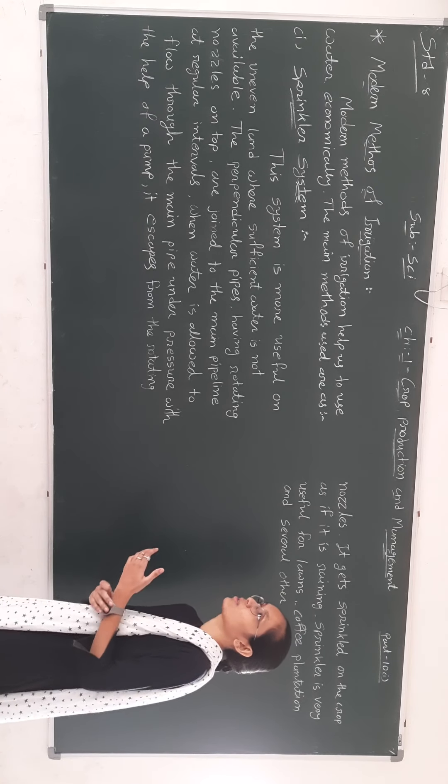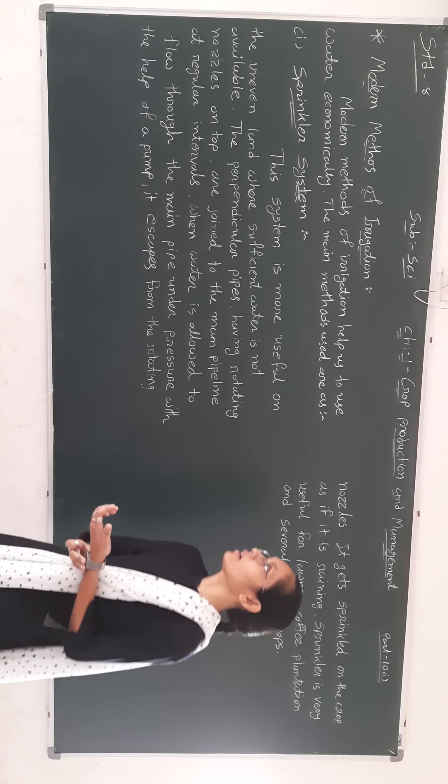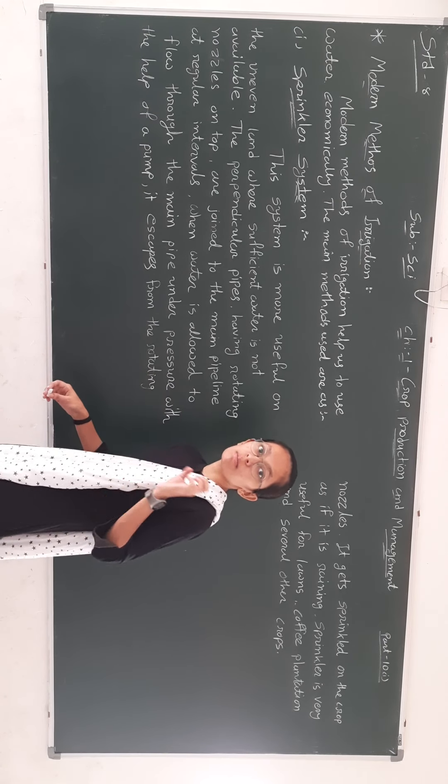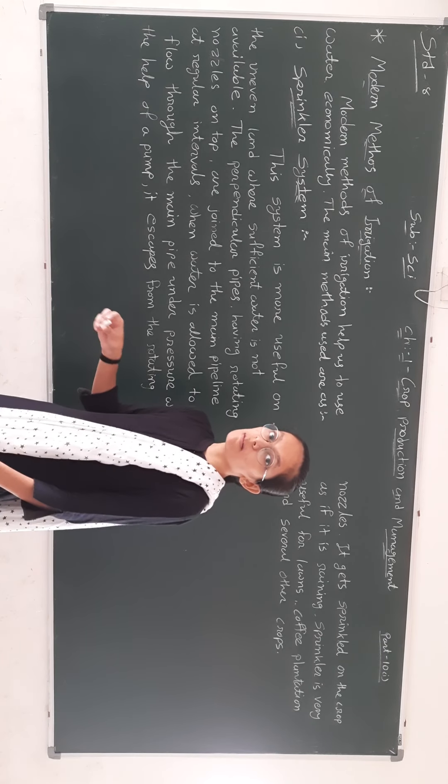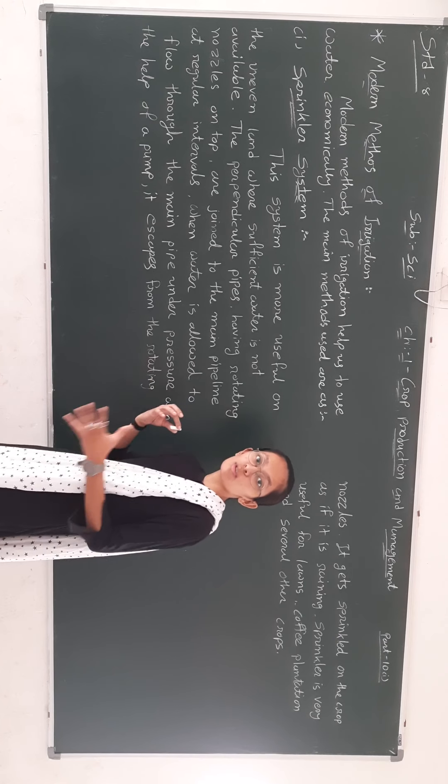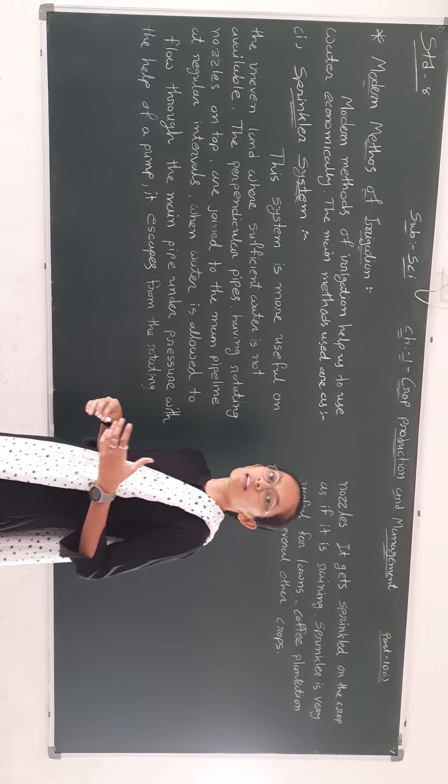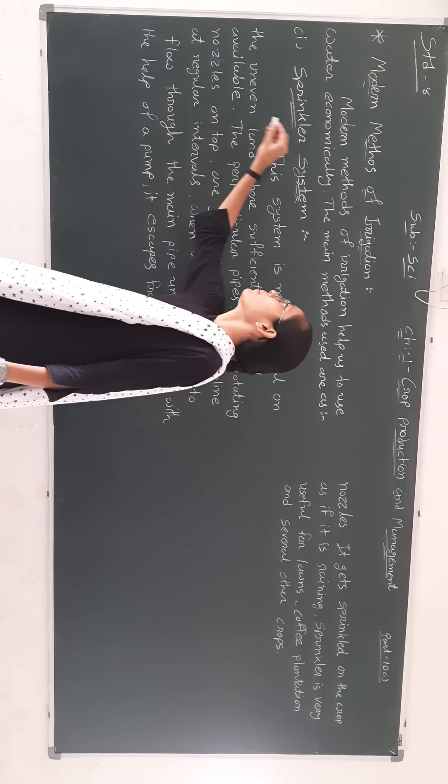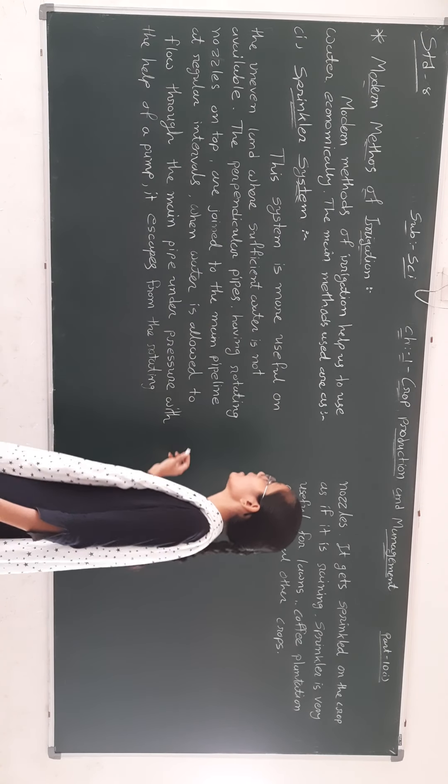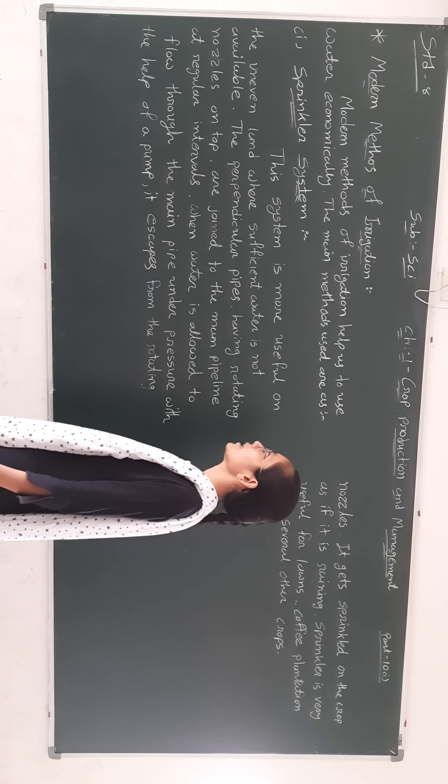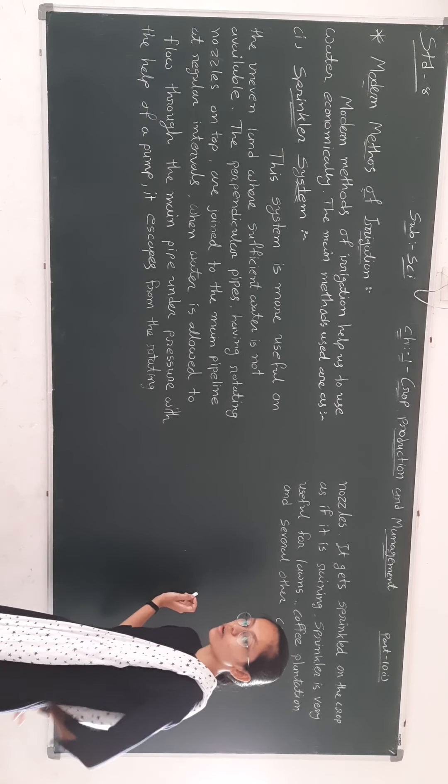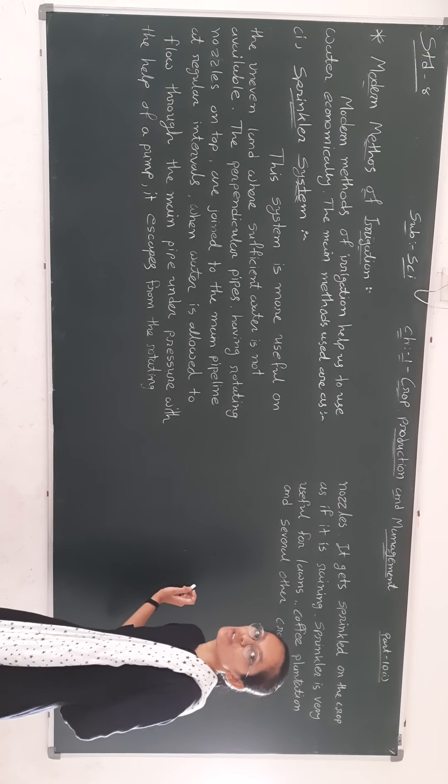We are talking about the modern method of irrigation. What is the modern method of irrigation? The modern method of irrigation uses water economically, that means the method uses less water. The modern method is easy to use like these methods.